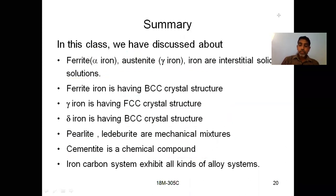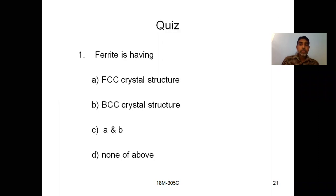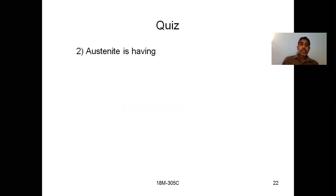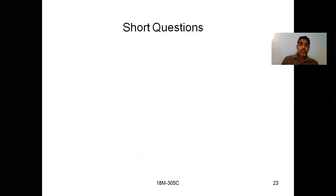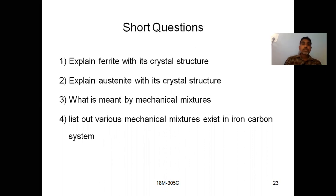For the quiz: What is the structure of ferrite? BCC crystal structure. What is the structure of austenite? FCC crystal structure. These are very important exam questions. Explain ferrite with crystal structure: ferrite is alpha iron in BCC. Explain austenite with crystal structure: FCC, and how is austenite formed. What are mechanical mixtures in iron-carbon system? Pearlite and ledeburite.